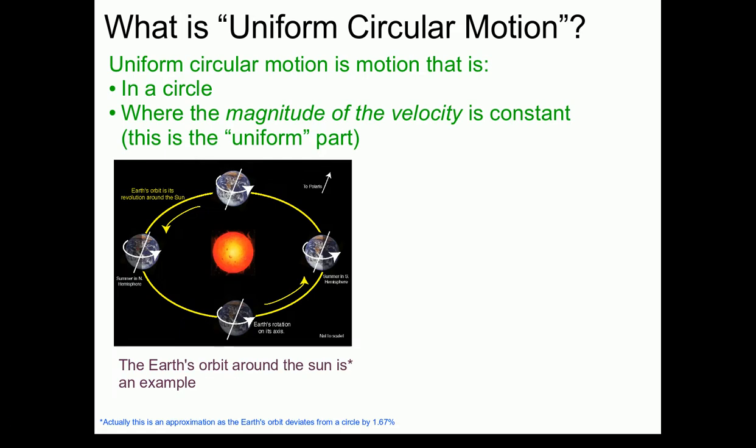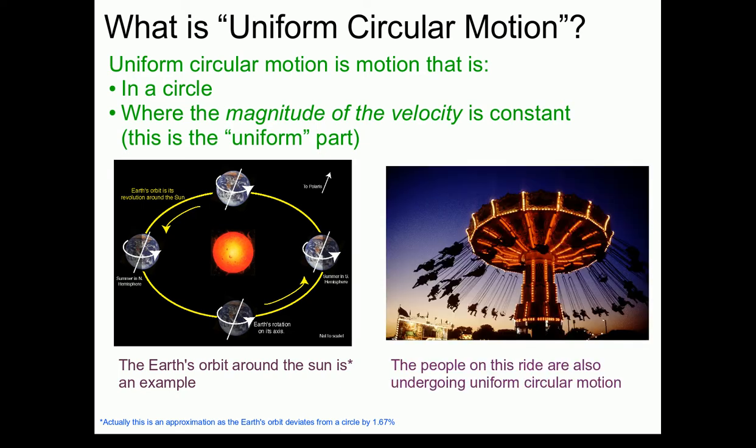Here are a couple of examples. The first example is the Earth's orbit around the Sun — the Earth moves in very, very close to a circle, and its speed as it goes around the Sun is constant. Another example is a common carnival ride where people on swings go around and around a circle. These people are also undergoing Uniform Circular Motion.